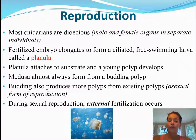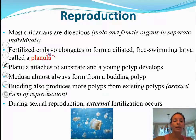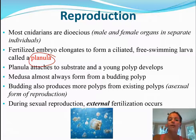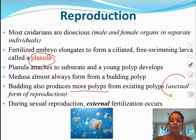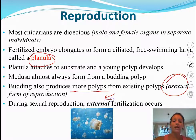The reproduction of cnidarians is also unique. They are dioecious, meaning there are separate males and females with organs in separate individuals. A fertilized embryo forms a larva with cilia called a planula — make sure you remember this term. The planula attaches to a substrate and forms a young polyp. Eventually, medusa forms from budding polyps. Budding is asexual reproduction, producing more polyps from existing ones. But since they have separate male and female organs, they can also reproduce sexually through external fertilization.